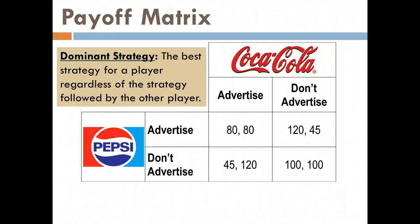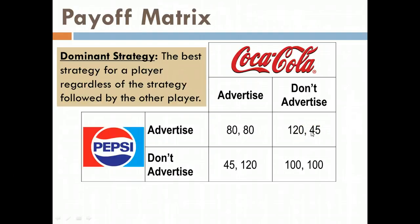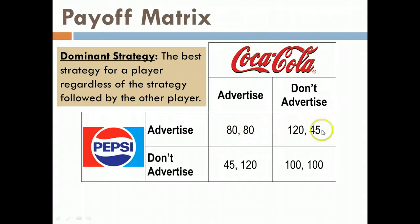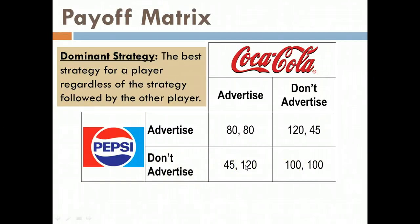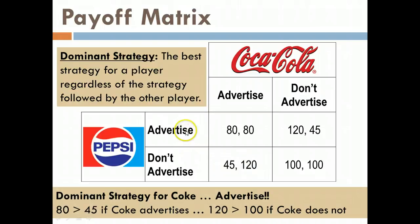Coke wants to find its dominant strategy — which choice gives the best outcome regardless of what Pepsi does. If Pepsi chooses to advertise, Coke gets 80 points by advertising versus only 45 by not advertising, so advertising is better. If Pepsi chooses not to advertise, Coke gets 120 by advertising versus 100 by not advertising — again, advertising is better. So Coca-Cola's dominant strategy is to advertise because regardless of what Pepsi does, it's the best option.